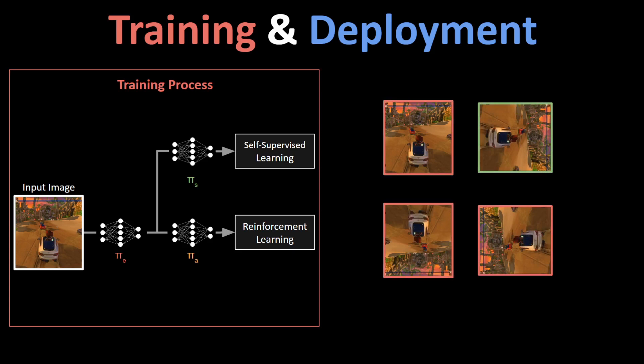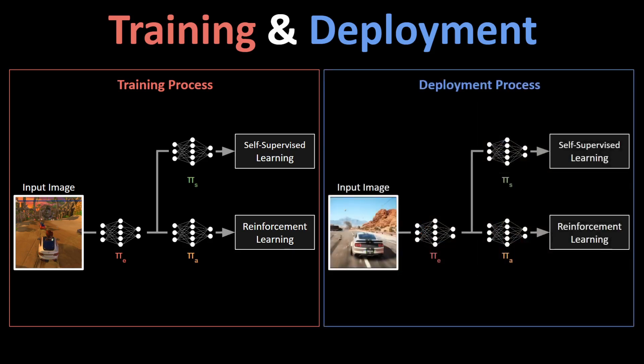Now, here comes the key part. During deployment, we do not have the reward signal, but we can still fine-tune our network by using the same self-supervision task. This allows our latent representation to adjust to the visual changes in the input image while still allowing us to obtain our learned controller actions from this latent.